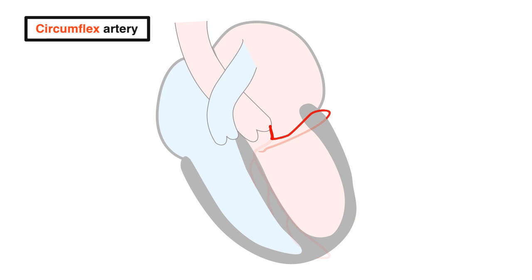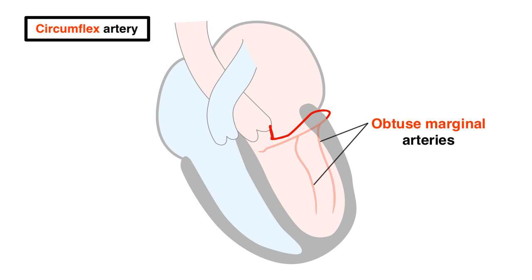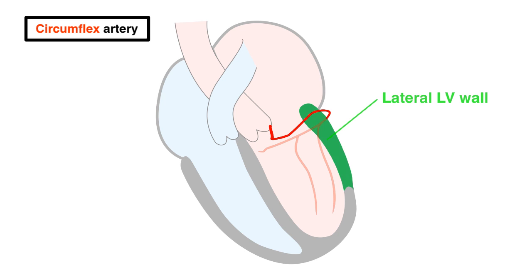The circumflex descends down the AV groove of the left ventricle, giving off obtuse marginal arteries. The circumflex system vascularizes the lateral wall and the posterior wall of the left ventricle.